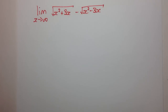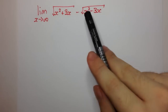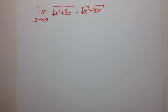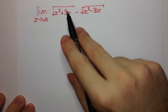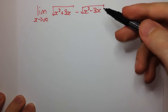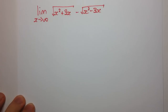This type of limit involves some square root signs, some radicals. A trick that's often used to solve these types of limits where they involve radicals is to multiply by the conjugate of these radicals.